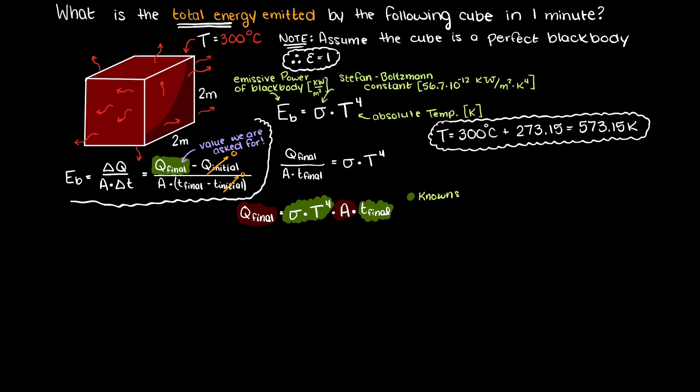Now, we know the Stefan-Boltzmann constant and the temperature of our body, and the time, so all we need to do to complete this problem is find the area of our cube. As a cube has 6 identical sides, we can just multiply the area of one of our sides by 6, therefore we have 4 times 6 and a total area of 24 meters squared.